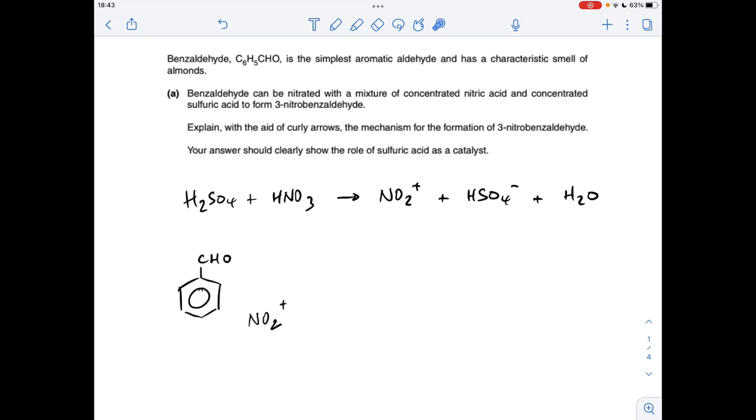Next thing to happen is we bring the electrophile and the benzaldehyde together and we take a pair of electrons. So a curly arrow from the delocalised ring of pi electrons comes out to the electrophile.